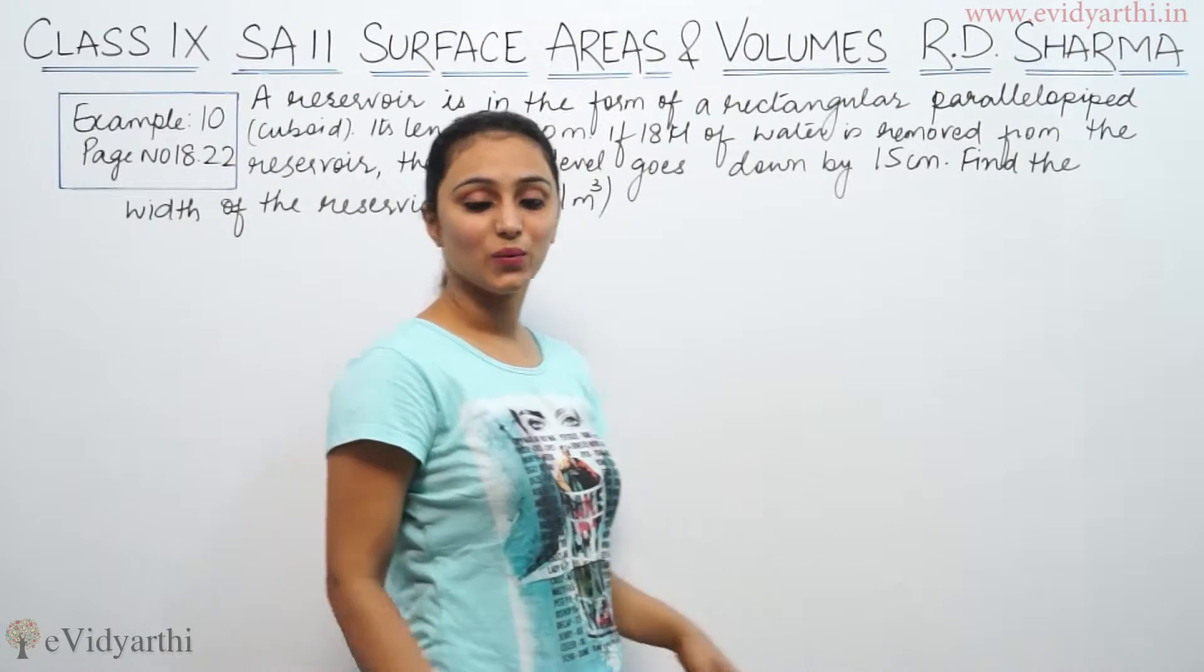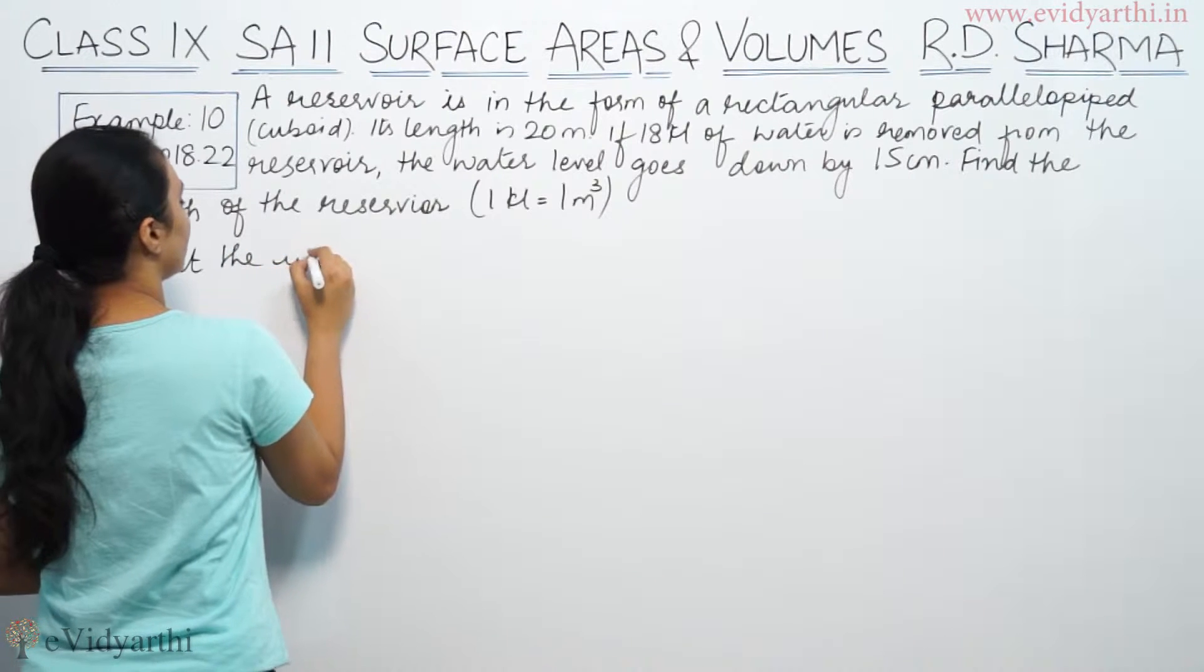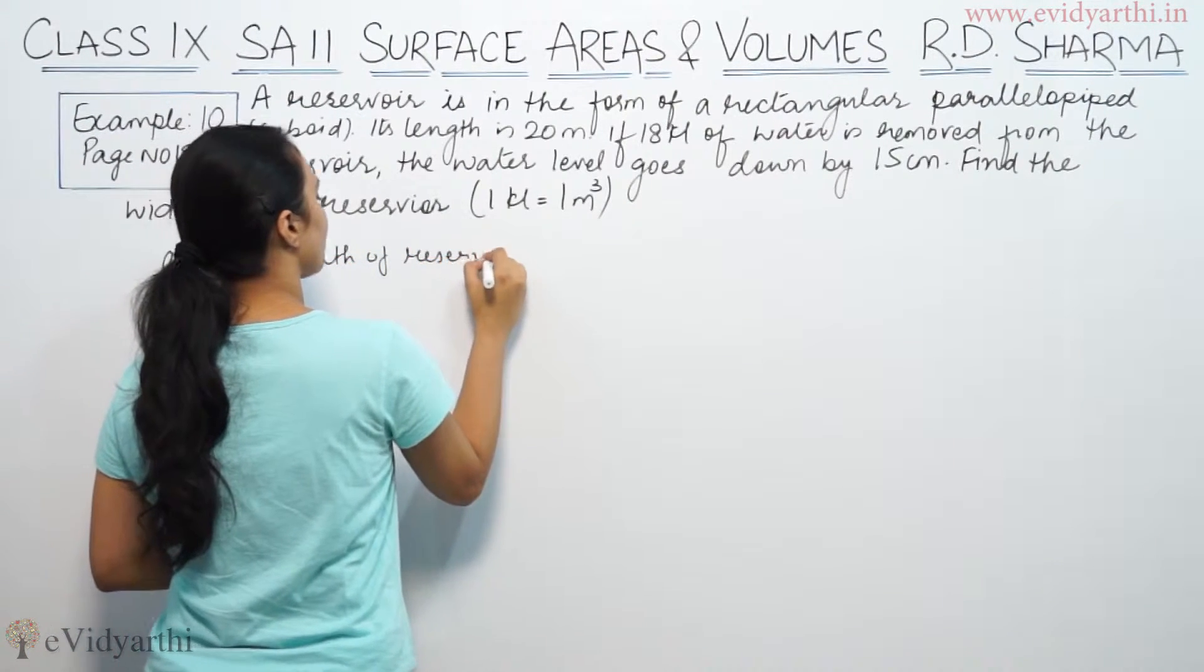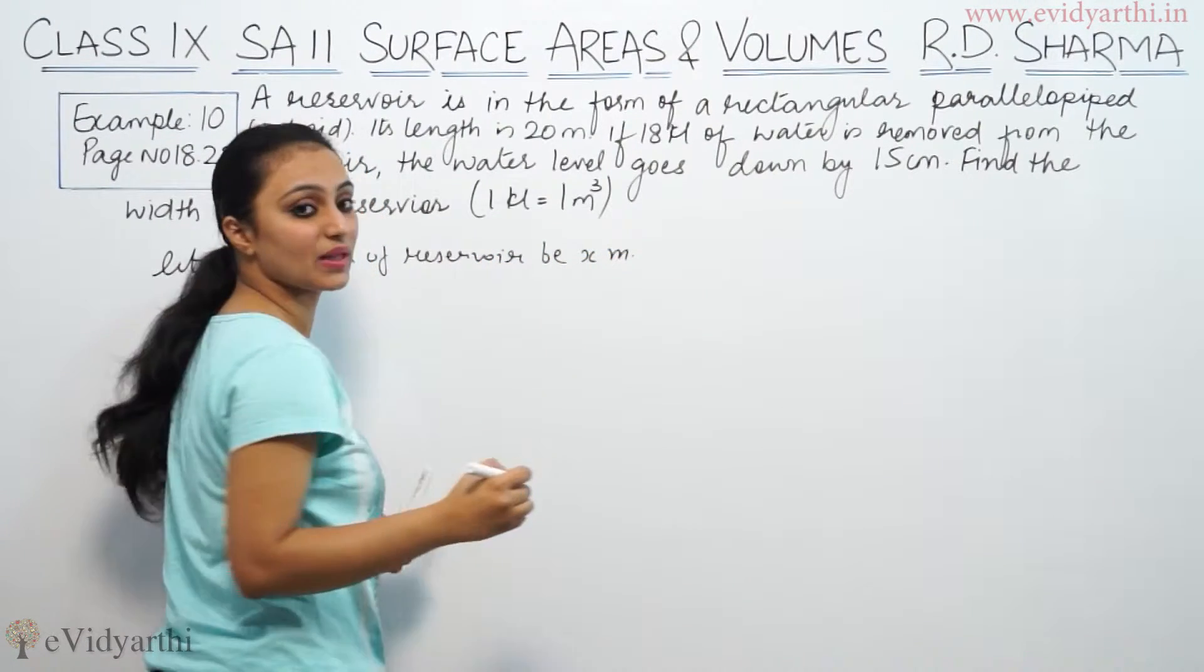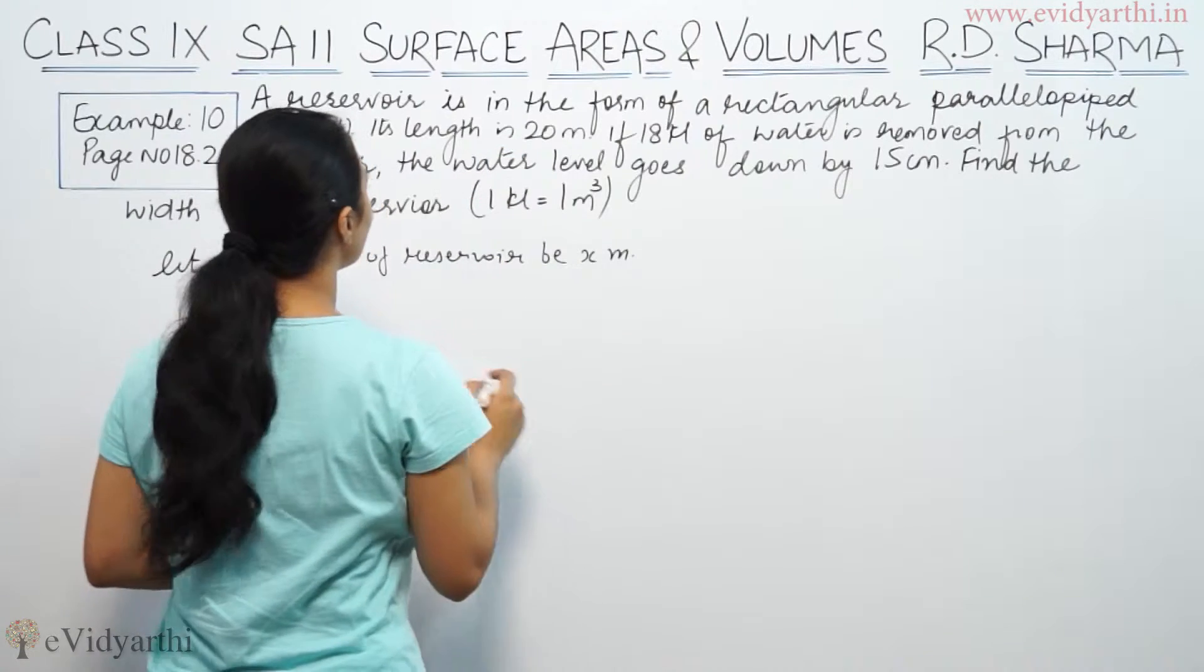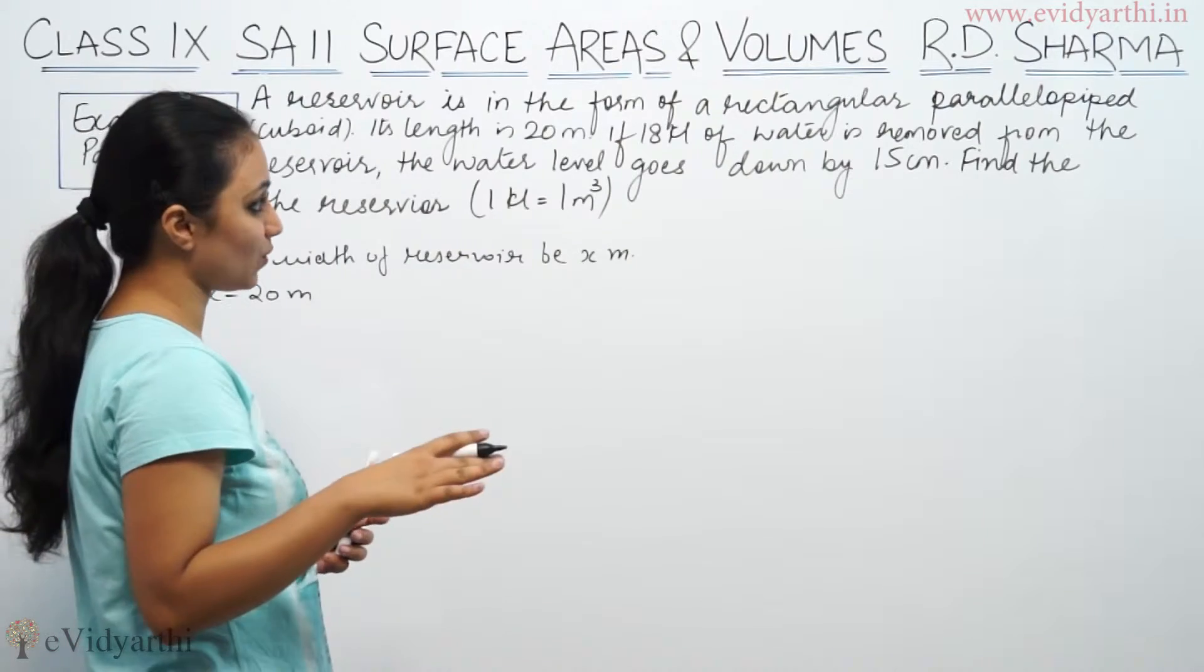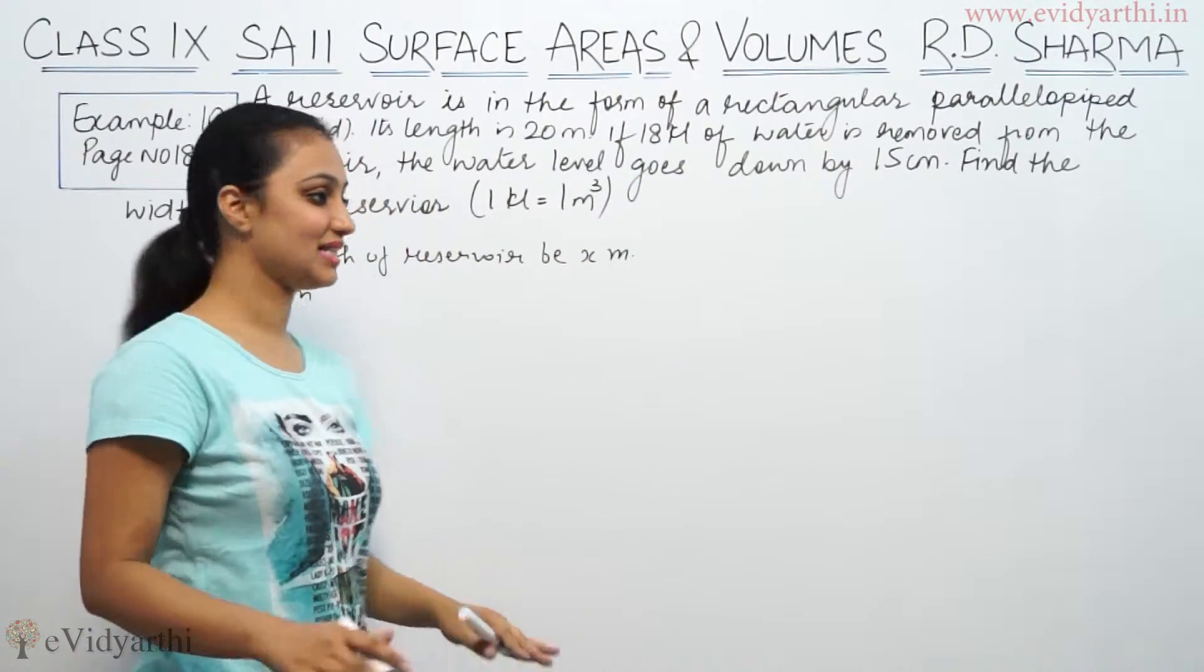We have the width of the reservoir. Let the width of the reservoir be x meters, and the length given is 20 meters.